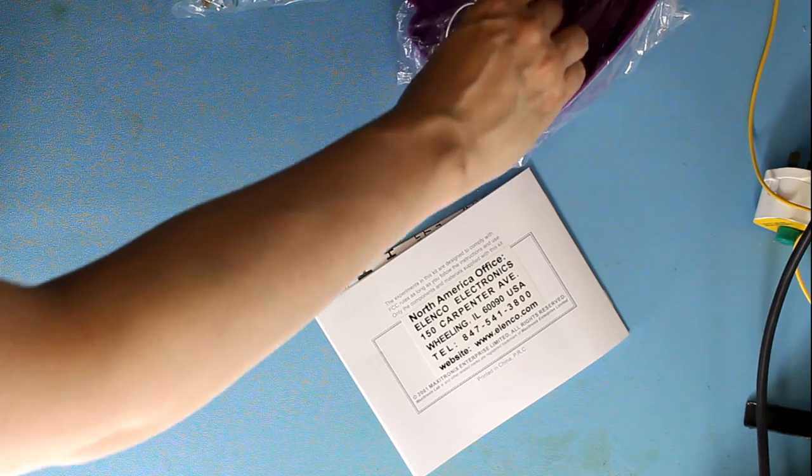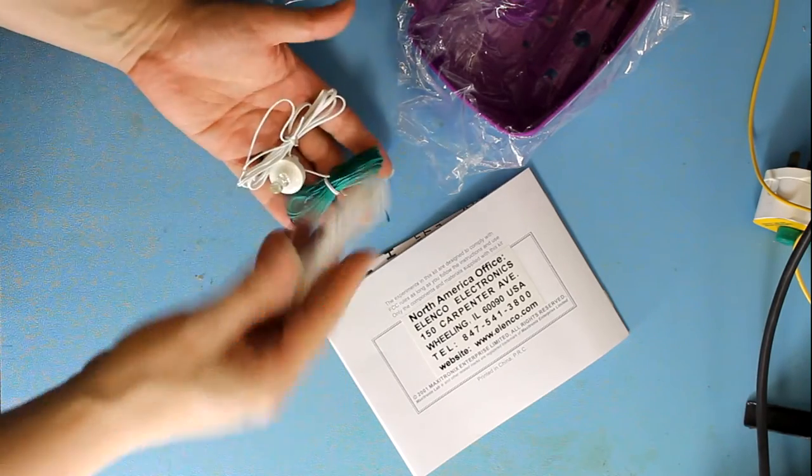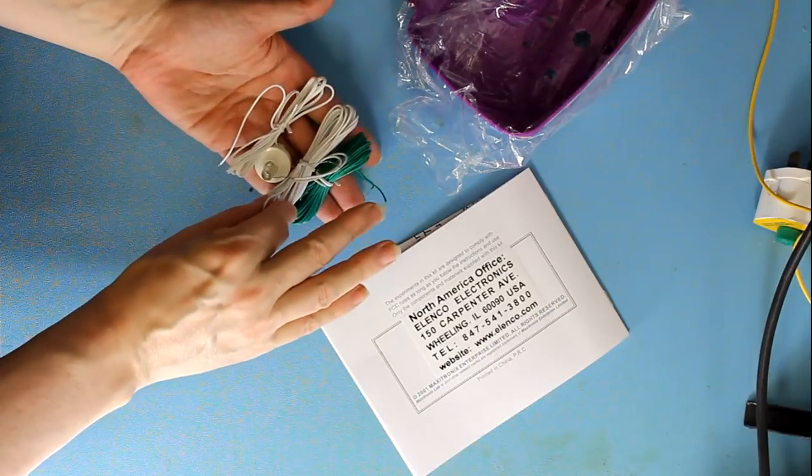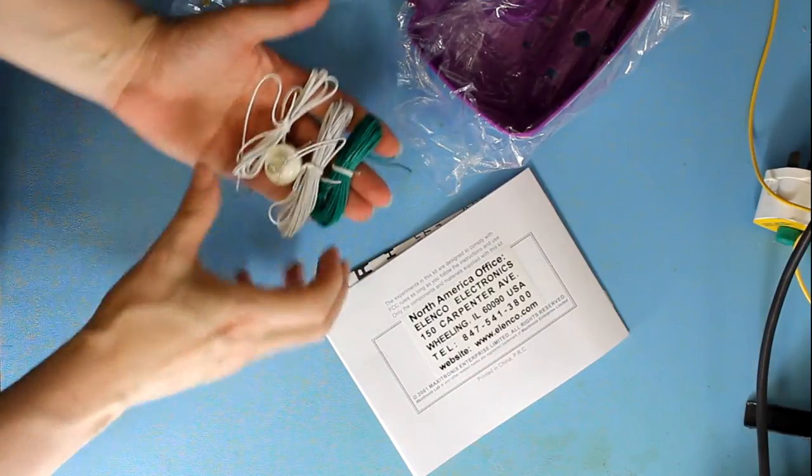So you'll have an earpiece, green wire, white wire. Green wire is your antenna, white wire is your ground, and earpiece is for listening to your radio there.